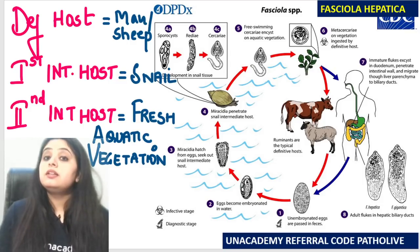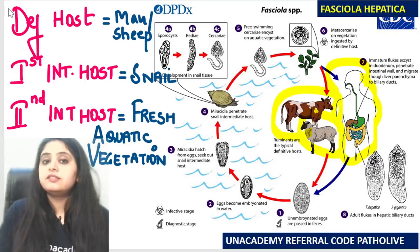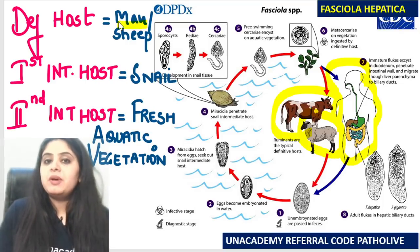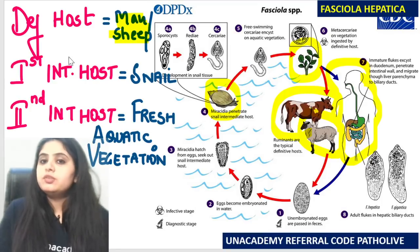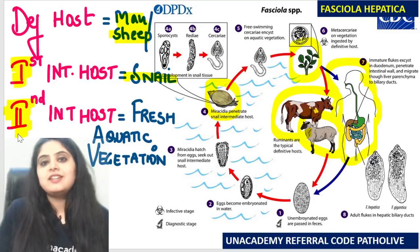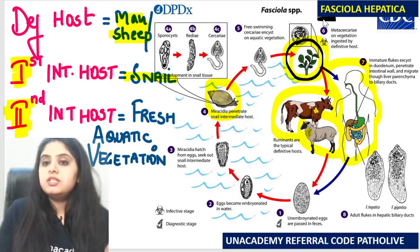Look at the life cycle and pick up the hosts. The definitive hosts here are sheep and man. Number two, I can see a snail and I can see aquatic vegetation. So the first intermediate host is the snail — remember, trematodes is all about the second intermediate host story. For Fasciola, the second intermediate host is fresh aquatic vegetation.